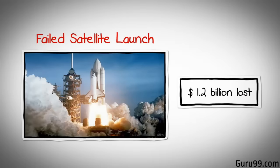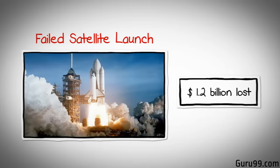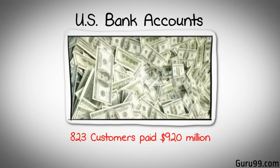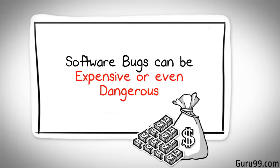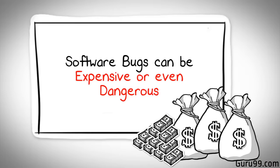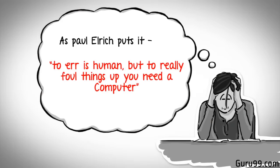In April of 1999, a software bug caused the failure of a $1.2 billion military satellite launch, the costliest accident in history. In May of 1996, a software bug caused the bank accounts of 823 customers of a major U.S. bank to be credited with $920 million. Testing is important because software bugs can be expensive or even dangerous. As Paul Ehrlich puts it, to err is human, but to really foul things up you need a computer.